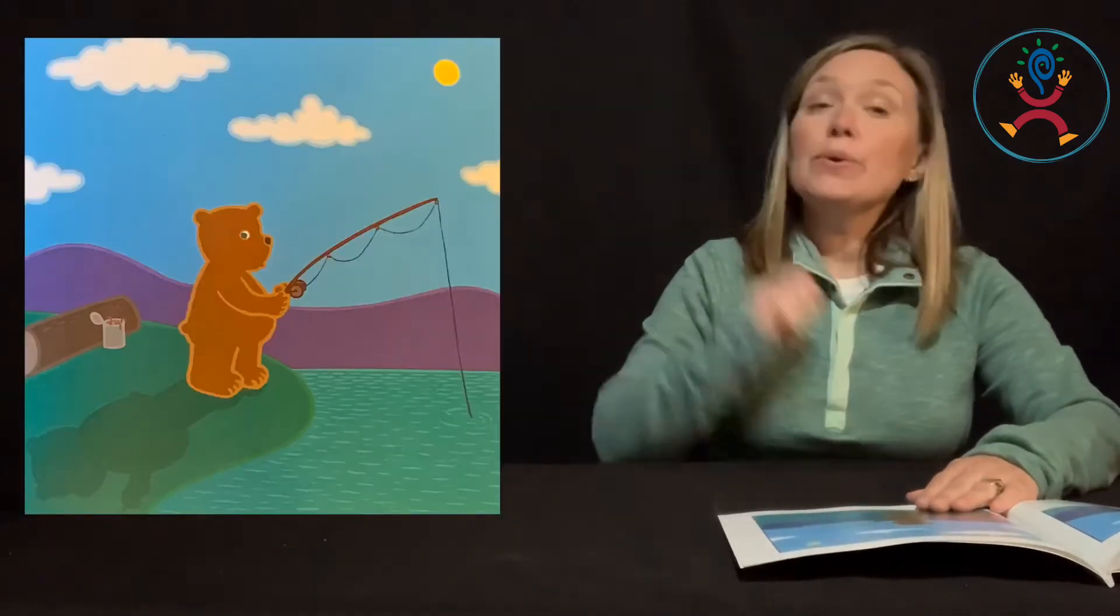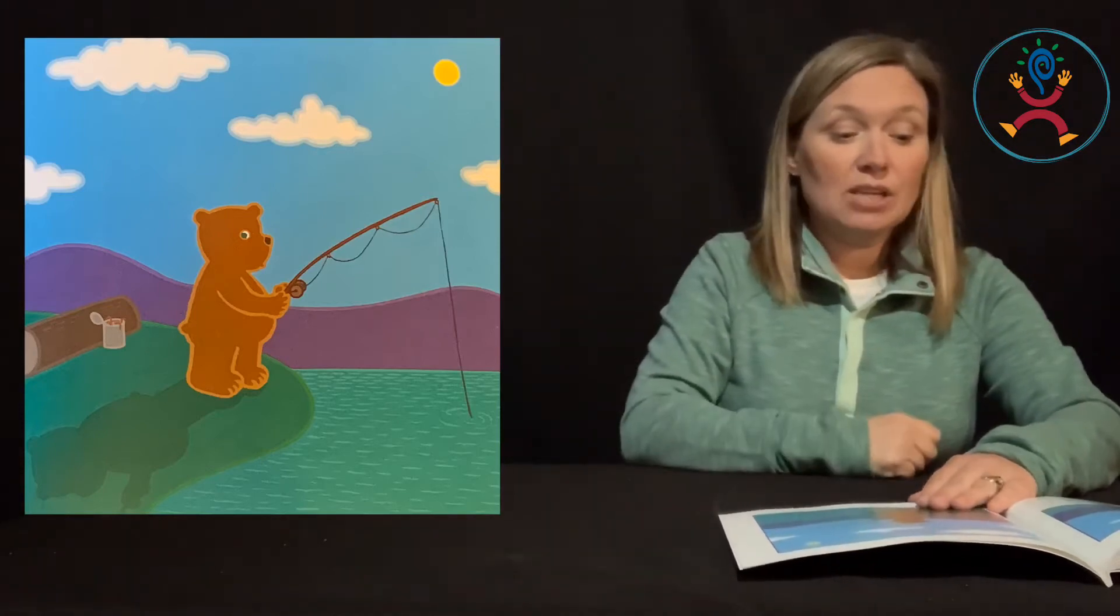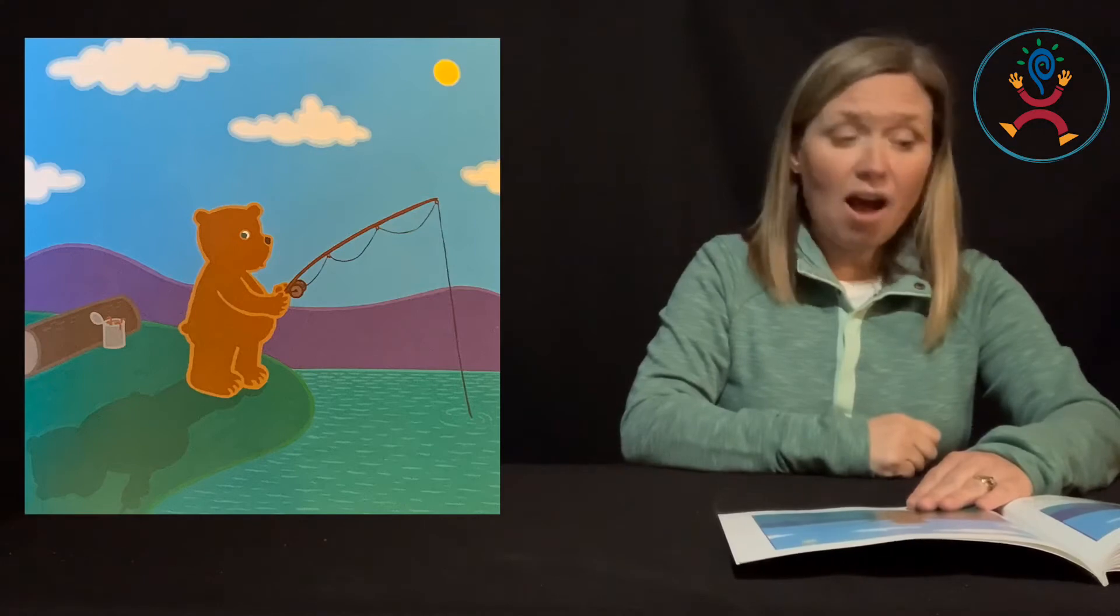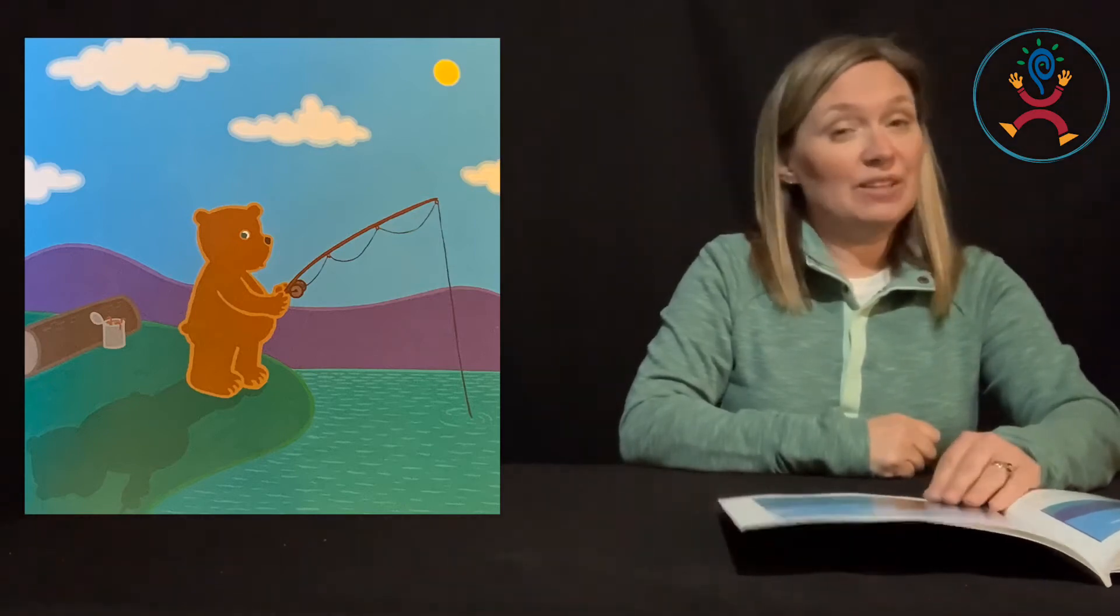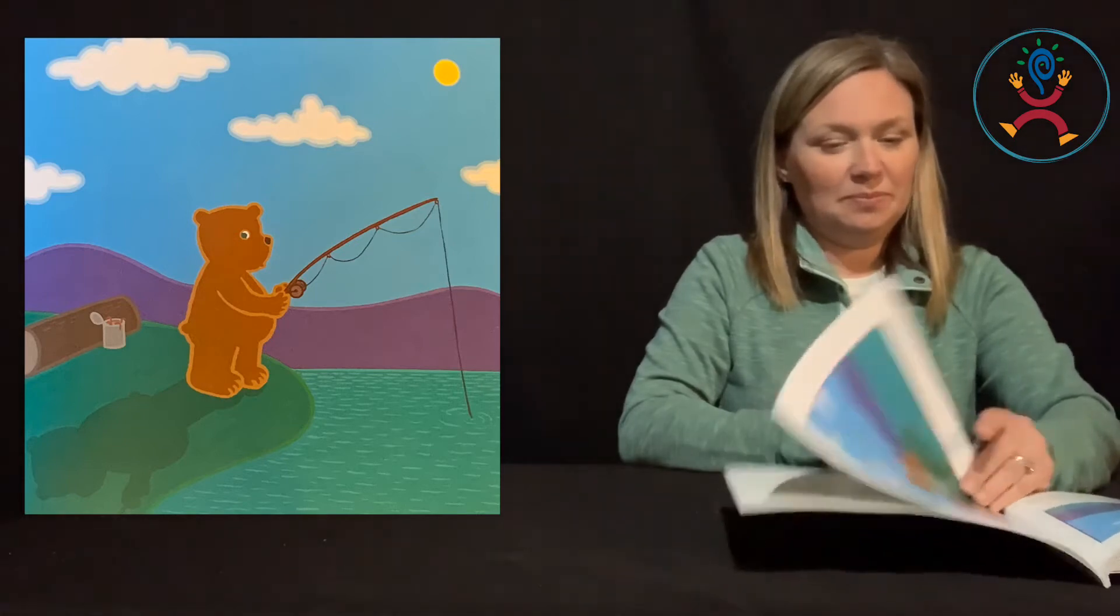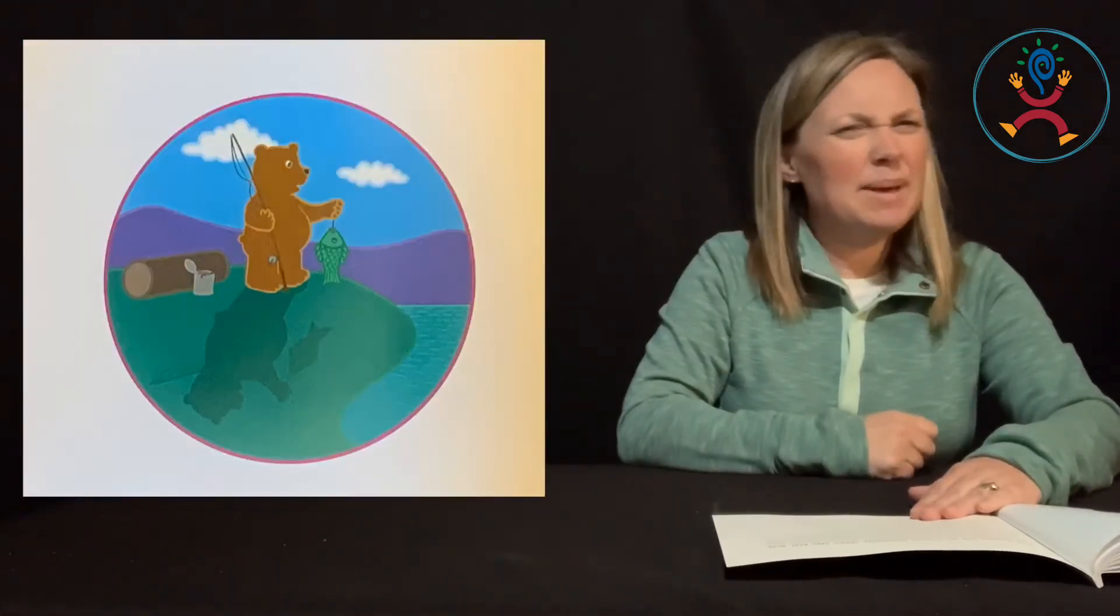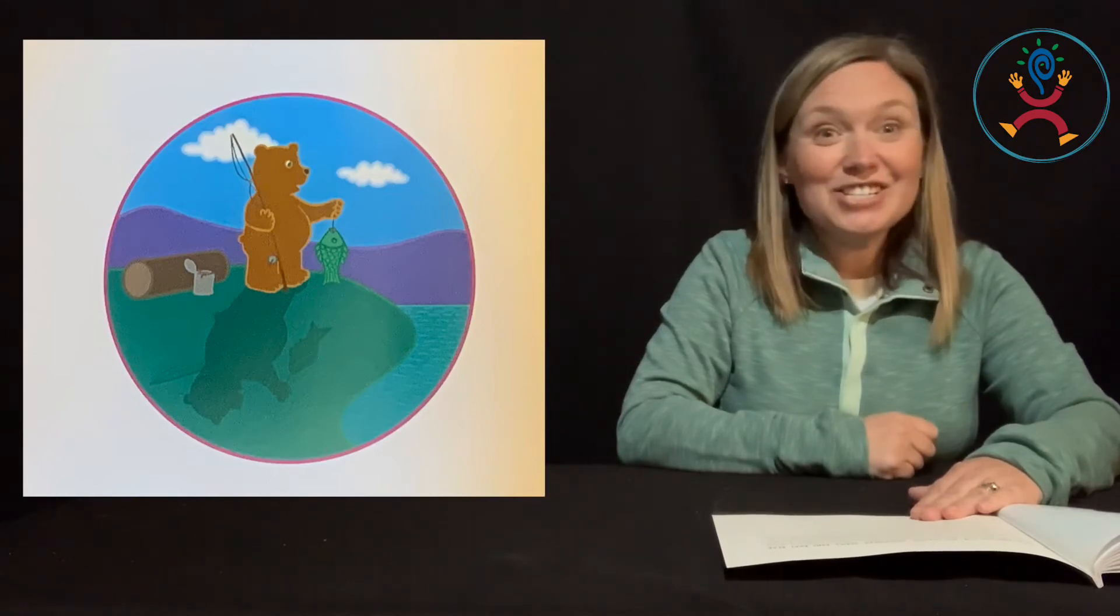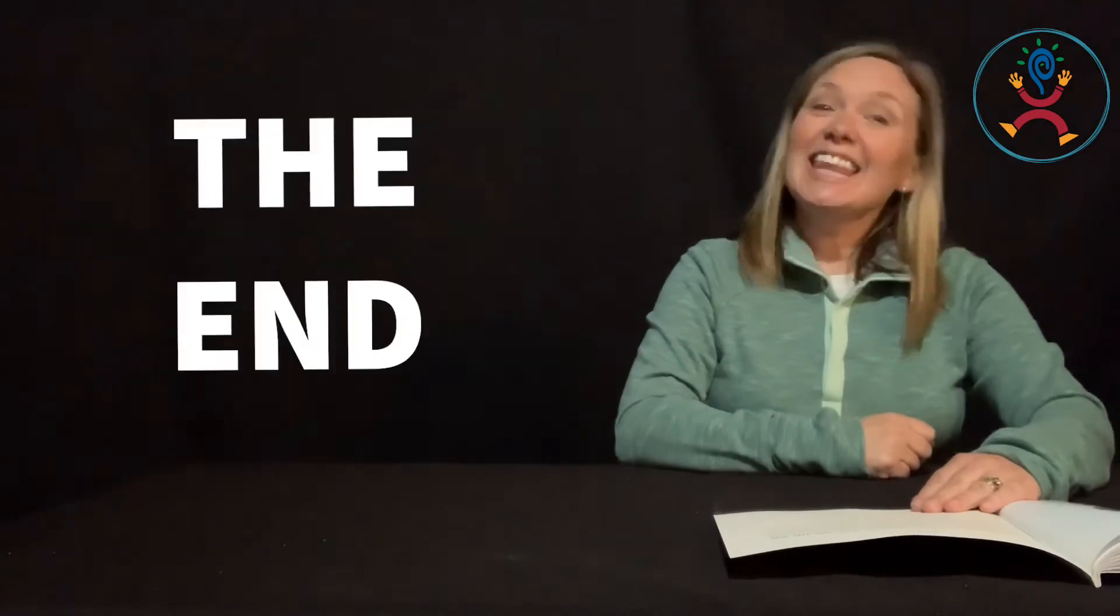So Bear went back to the pond and once again threw his line into the water. By this time, the sun was in a different part of the sky, which made it easy for Shadow to keep his part of the deal. And when Bear caught that big fish, Shadow caught one too. The end.